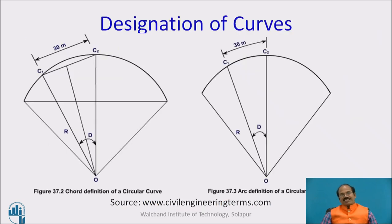The curves are normally designated in two ways: one is radius of curve, the other is by using the degree of curve. As is apparent from the sketches shown here, there is chord definition of a circular curve wherein the basic unit for derivation is this chord C1-C2 having a length of 30 meters which makes an angle D at the center of curvature. The other one is the arc definition wherein this arc length is taken as the unit for consideration, and at the center the degree of curve is D. There are two derivations corresponding to each of these.